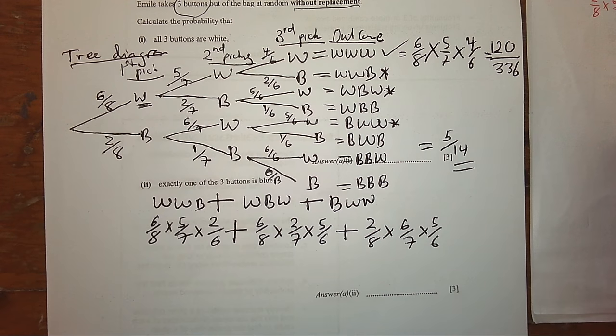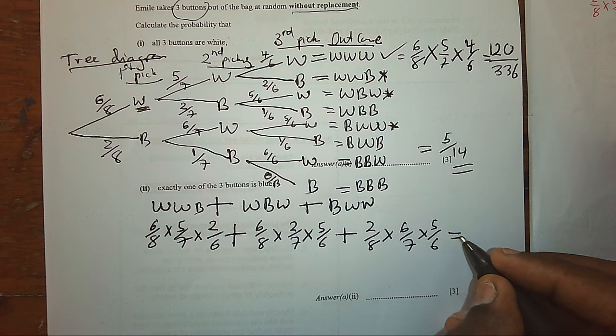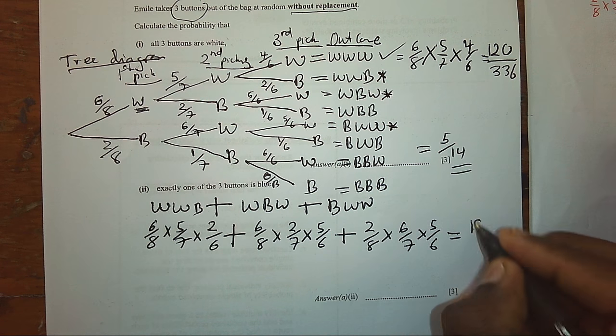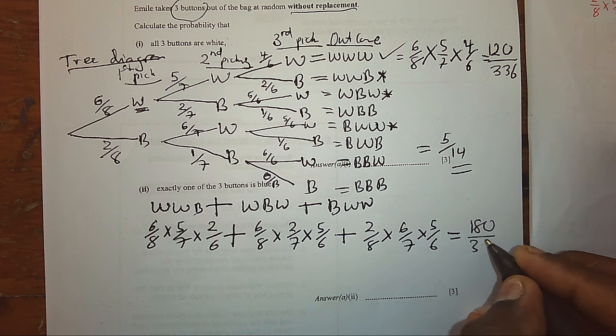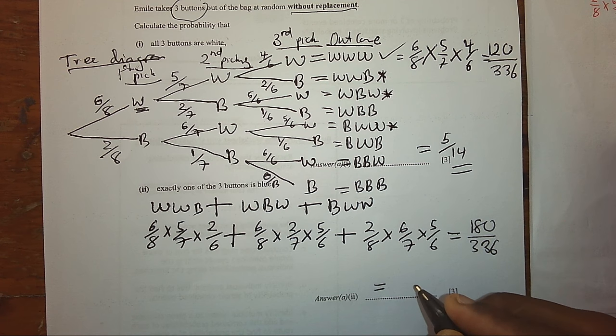So, when we multiply this all, we shall end up with one hundred and eighty over three hundred and thirty-six. Of which we can simplify to fifteen over twenty-eight. That is the solution to our problem.